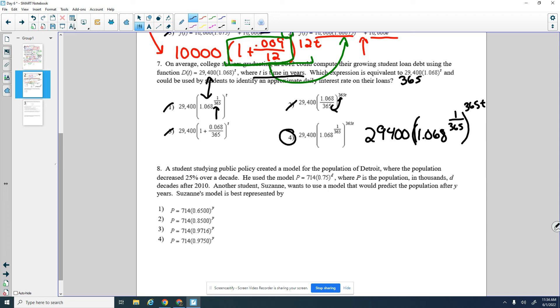The last one says a student studying public policy created a model for the population of Detroit, where the population decreased 25% over a decade. He used this model, where P is the population in thousands, D decades after 2010. Another student, Suzanne, wants to use a model that would predict the population after Y years. Suzanne's model is best represented by which. So we see this decreases by 25% came from 1 minus 0.25, so that's where we got the 0.75 from. Don't really need to know that to do the problem, but just to give a little background. Now, we're actually changing the variable here.